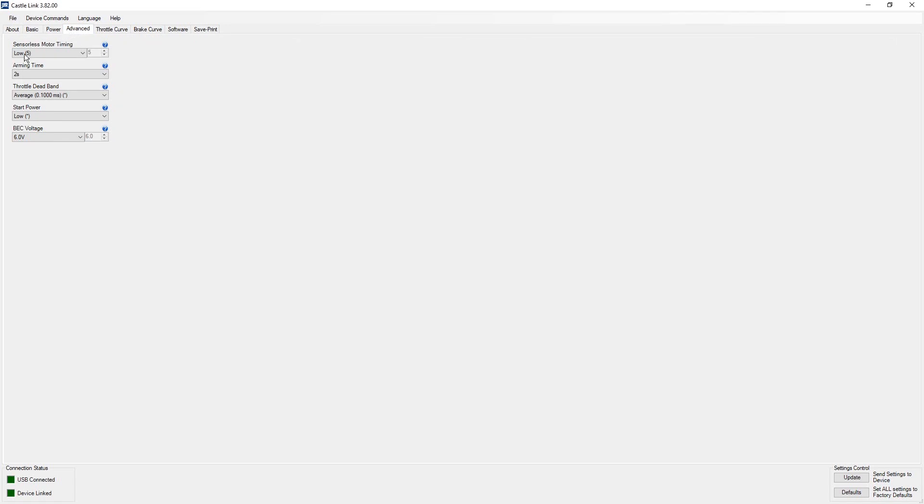The only way that you're able to modify the settings of your speed control, if it has this capability, is to either do it with some sort of programming card or plug it into your computer. Again, this is highly and only dependent on if the manufacturer of that speed control does provide these options as features that you can alter and change.